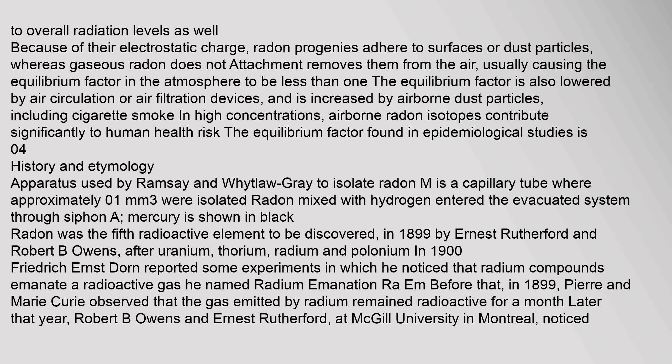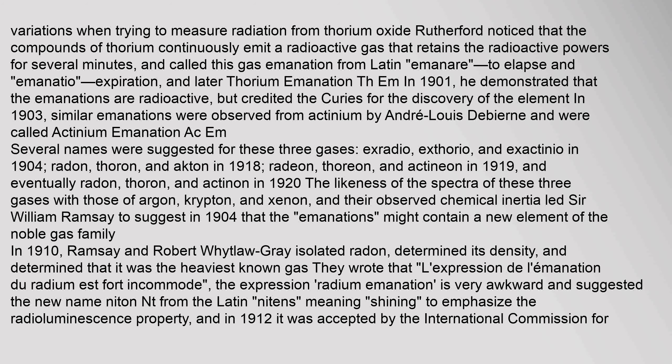History and etymology: When trying to measure radiation from thorium oxide, Rutherford noticed that compounds of thorium continuously emit a radioactive gas that retains radioactive powers for several minutes. He called this gas 'emanation' (from Latin 'emanare,' meaning to elapse) and later 'thorium emanation' (ThEm). In 1901 he demonstrated that the emanations are radioactive but credited the Curies for the discovery of the element. In 1903, similar emanations were observed from actinium by André-Louis Debierne. Several names were suggested: xradio, xthorio, and xactinio in 1904; radon, thorin, and actin in 1918; radion, thorian, and actinion in 1919; and eventually radon, thorin, and actinon in 1920.